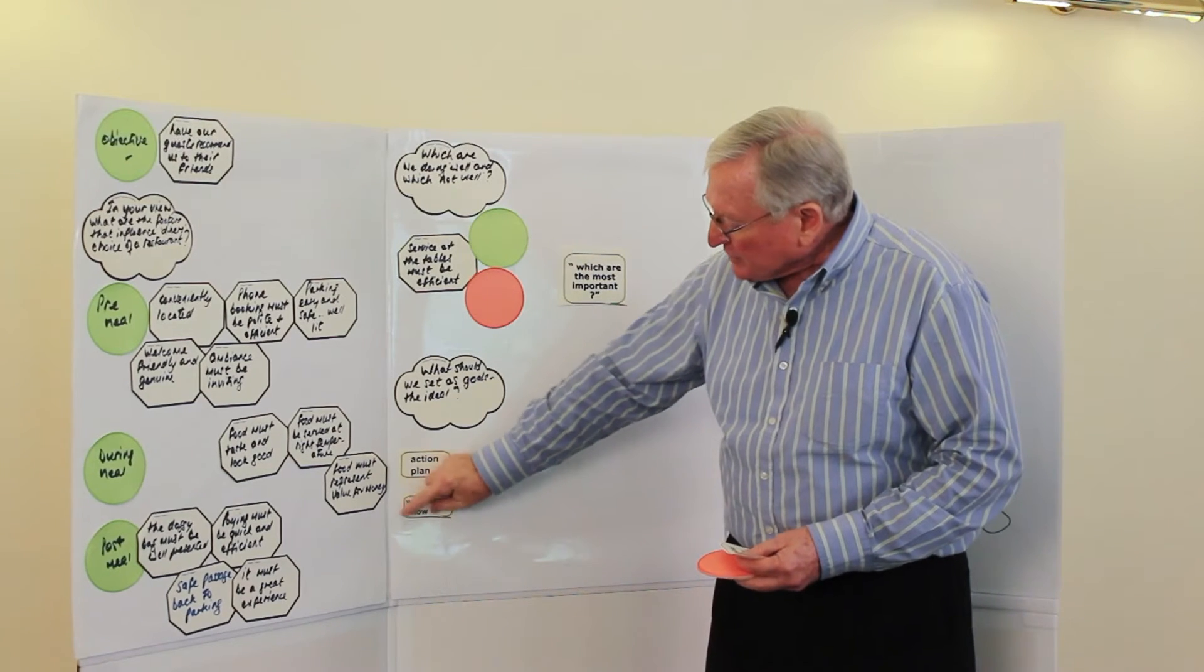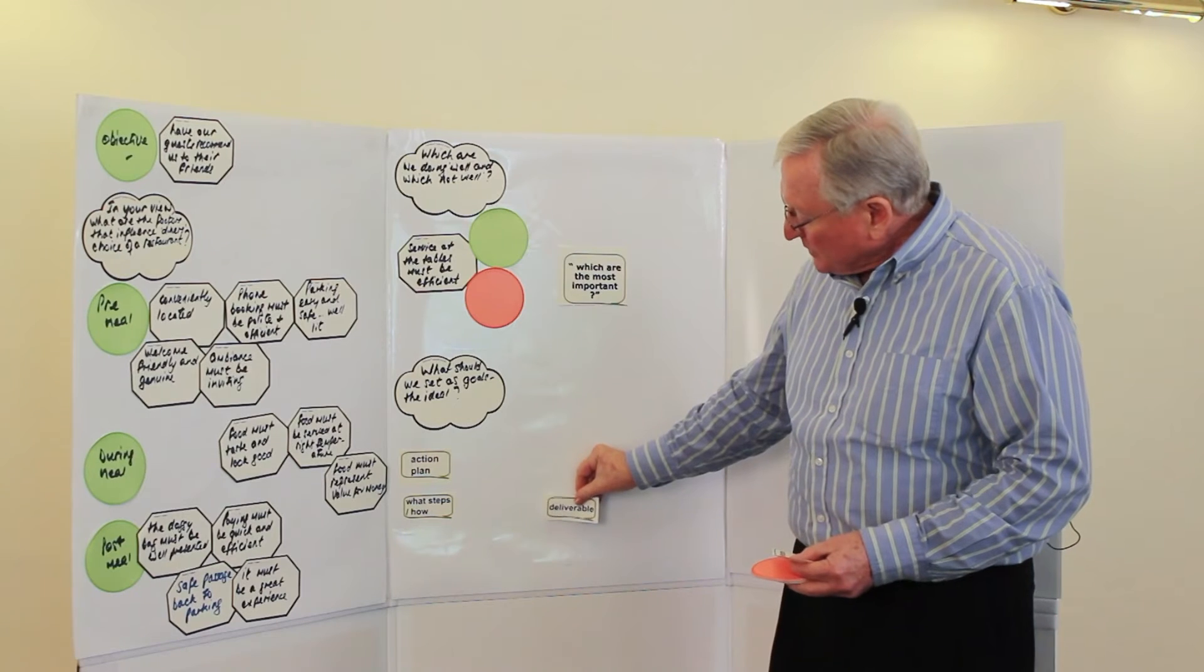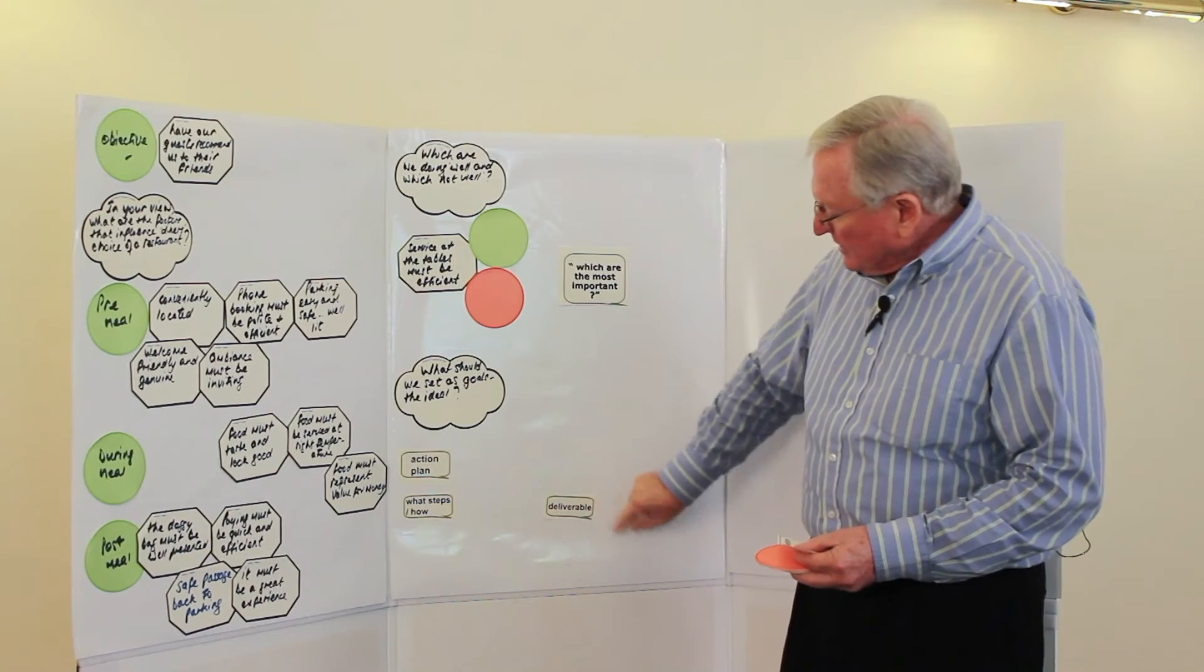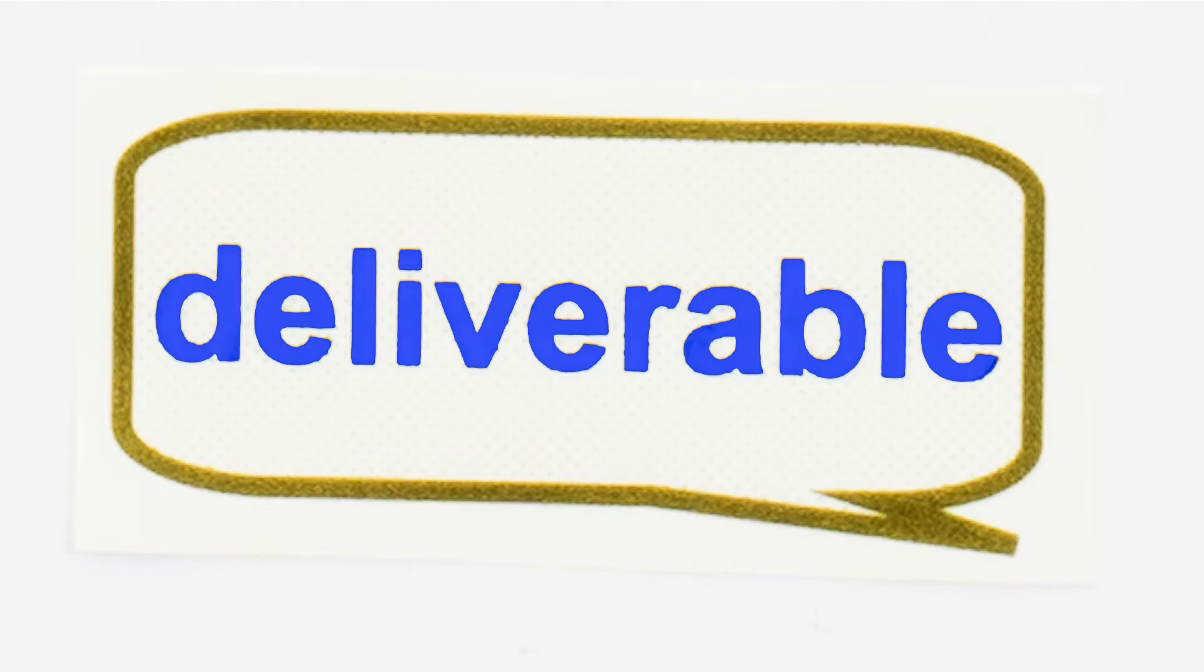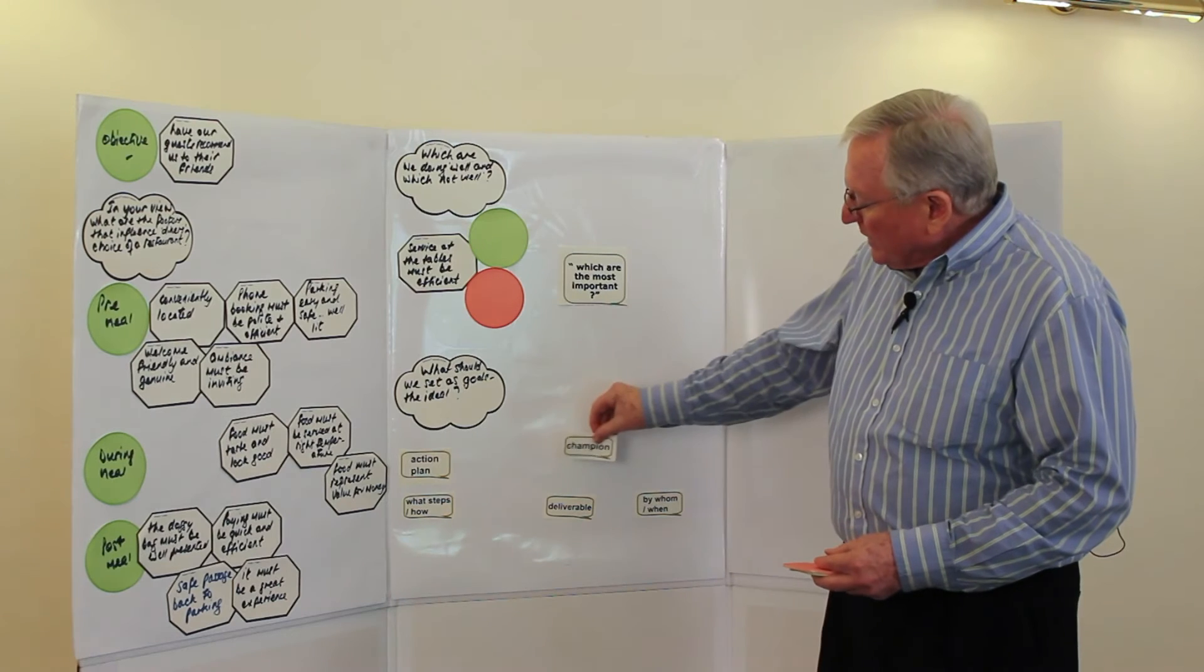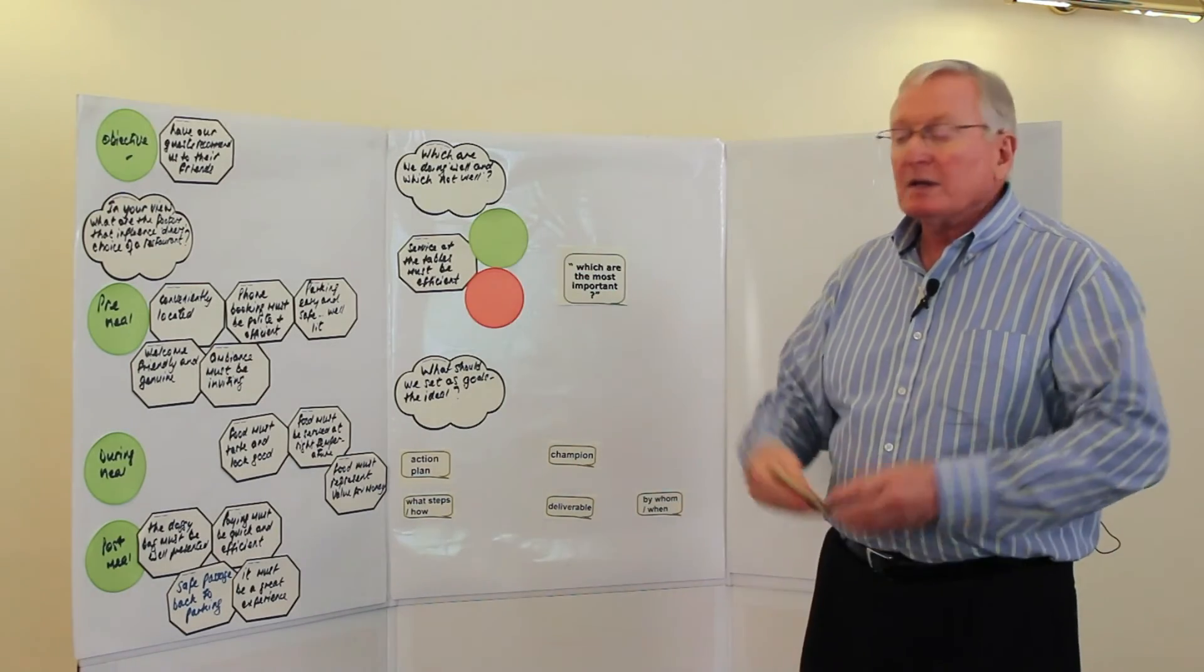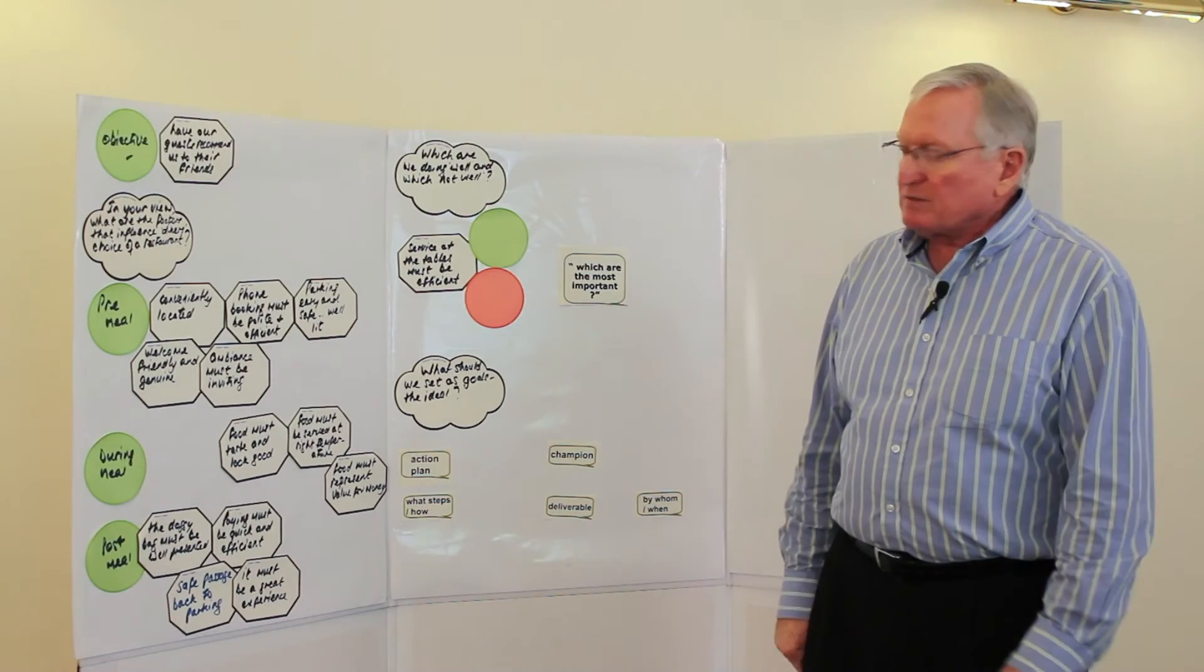And an action plan would consist of what steps do we need to take? How are we going to take those steps? What are those steps going to deliver as a deliverable? Who's going to ensure that it happens and by when? And then who would actually drive this project or process as the champion? And that would be a complete exercise on how we would build a strategy for how we're going to make our restaurant the best we can.